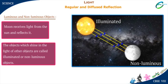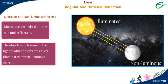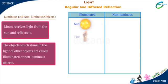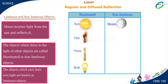The objects which shine in the light of other objects are called illuminated or non-luminous objects. On the other hand, there are objects which give their own light, such as the Sun, fire, flame of a candle, and an electric lamp. Their light falls on our eyes, which is how we see them. The objects which emit their own light are known as luminous objects.